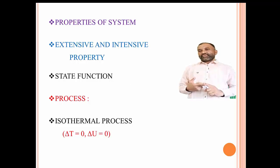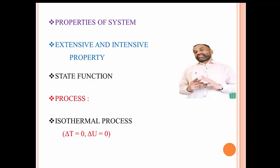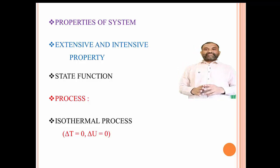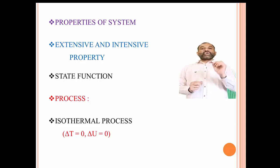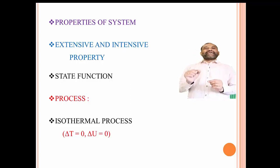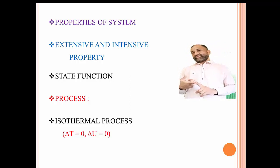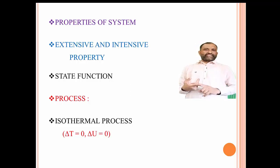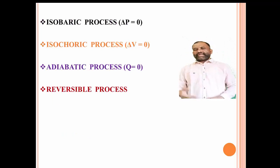This occurs due to heat exchange from the system to the surroundings or from the surroundings to the system, and the temperature remains constant. For the isothermal process, the change in internal energy delta U is also equal to zero. Hence, for an isothermal process, delta T equals zero as well as delta U equals zero.